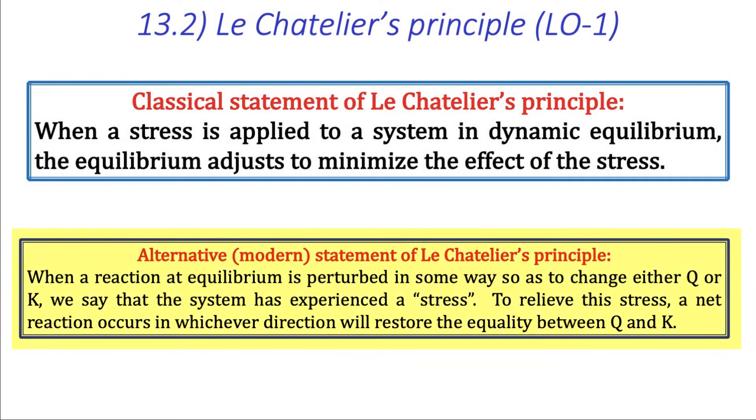When a reaction at equilibrium is perturbed in some way so as to change either Q, the reaction quotient, or K, the equilibrium constant, we say that the system has experienced a stress. To relieve this stress, a net reaction occurs in whichever direction will restore the equality between Q and K.